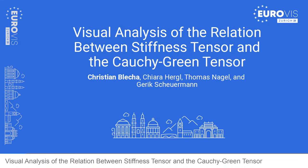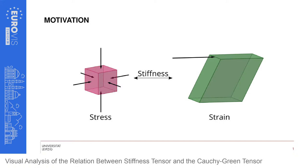The stress and strain tensor are two quantities well known by engineers from structural mechanics. They describe how material reacts under applied forces — how forces are distributed in the material and how the material deforms. The stiffness tensor creates a mathematical link between the stress and the strain tensor. The stiffness tensor itself is a fourth-order three-dimensional tensor with 81 coefficients. This complexity could be the reason why it's not so often considered for visualization. In this talk, I want to show how we use fiber surfaces to visualize the stiffness tensor and prove the link between the stiffness and stress tensor visually.